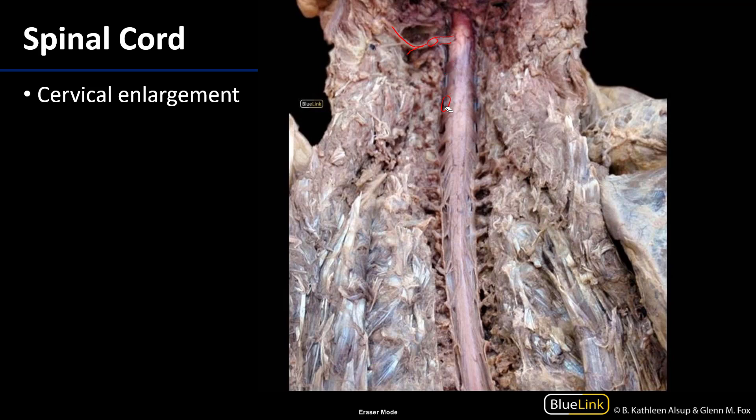This region in particular is so large because we have what's known as the cervical enlargement. You can see how this is much larger than the spinal cord here. There are two enlargements of the spinal cord: a cervical and a lumbosacral enlargement. These are areas of the spinal cord which are larger to account for a higher density of nuclei in the ventral horns of lower motor neurons serving the limbs. The cervical enlargement serves the upper limb, and the lumbosacral enlargement serves the lower limb.